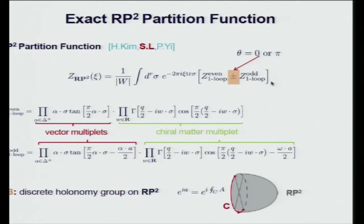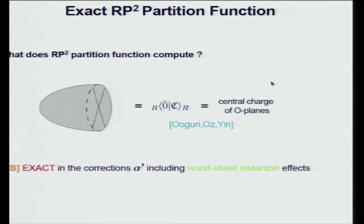With the supersymmetric theory on RP2 and the parity projection conditions, we use the localization technique to compute the exact RP2 partition function. W is the Weyl group, and we have contributions from two different kinds of supersymmetric saddle points: even holonomy and odd holonomy, corresponding to the discrete holonomy group along the non-contractible cycles in RP2. The two one-loop determinants are given by those expressions, and the relative sign is fixed by the value of the theta angle. Similar to the hemisphere case, this RP2 partition function computes the overlap between the canonical ground state and the crosscap state, giving the central charge of the orientifold plane, exact in alpha-prime.